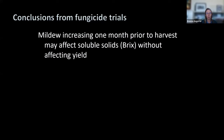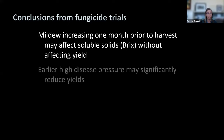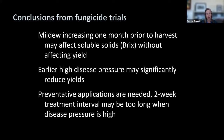From these trials, the outcome was not a specific calendar-based recommendation, but we do have general comments on timing. Mildew increasing one month before harvest can affect soluble solids without affecting yield, but earlier disease can reduce yield if it begins more than one month before harvest. Because this disease has a fairly long latent period, preventative applications are needed — especially in late-season planting areas with high disease pressure. By the time you see symptoms, the fungus has already been in the plant for several weeks. A two-week treatment interval is often sufficient, but may not be enough when disease pressure is high.